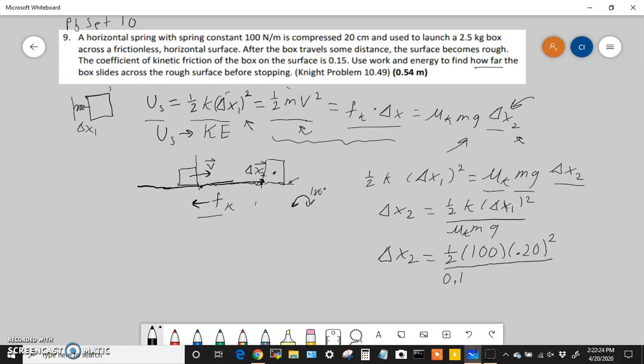And then over mu k, which is 0.15, then the mass is 2.5 kilograms, and g is 9.81. So at the end, when you do that on the calculator, delta x2, then it's going to equal essentially 0.54 meters.